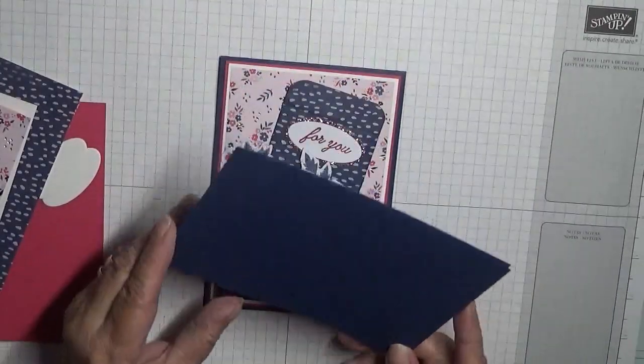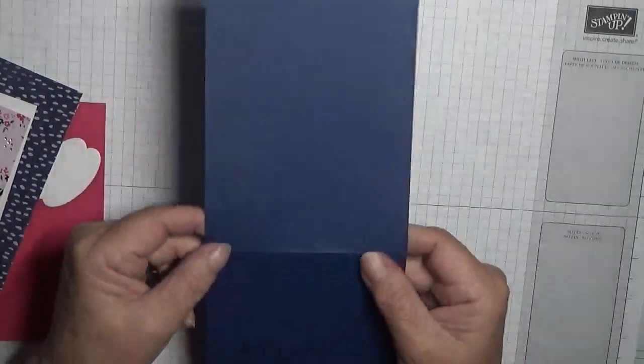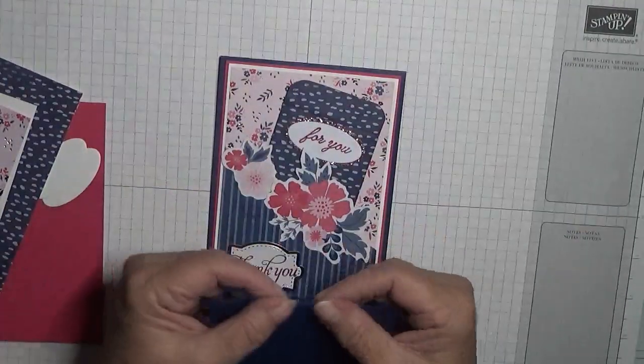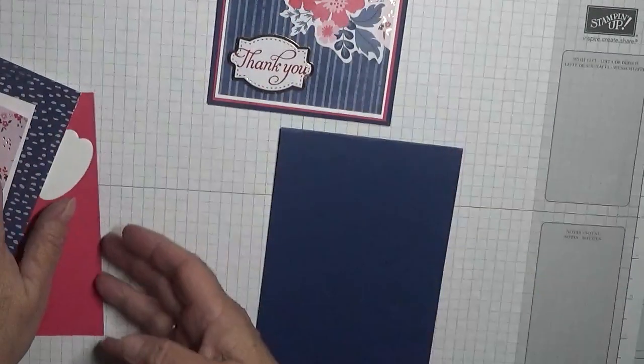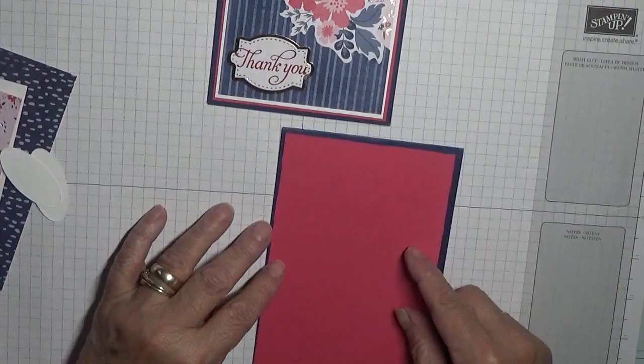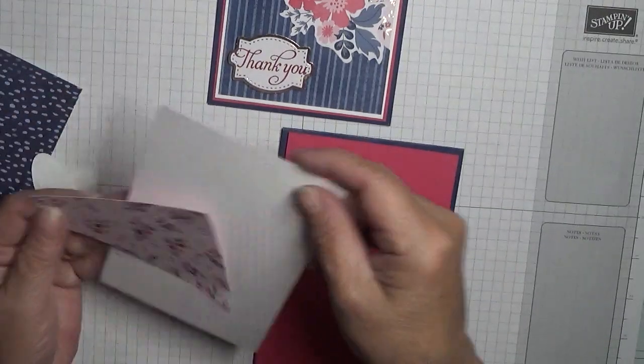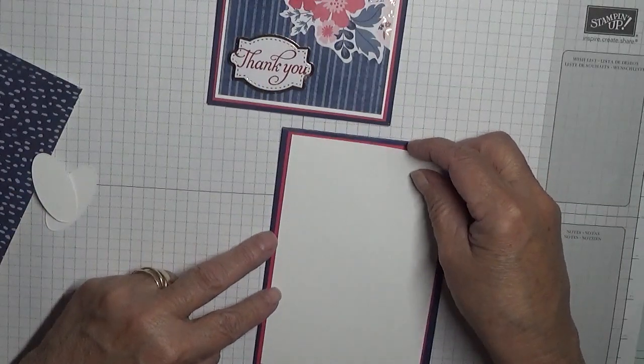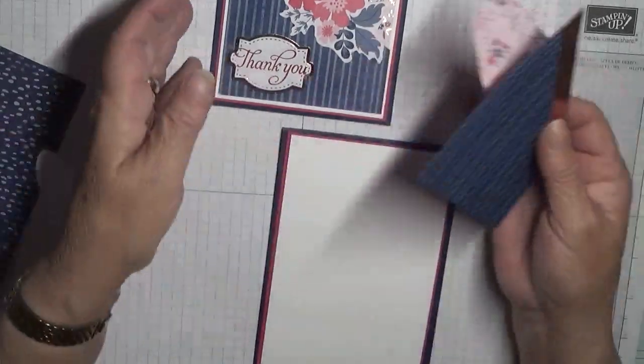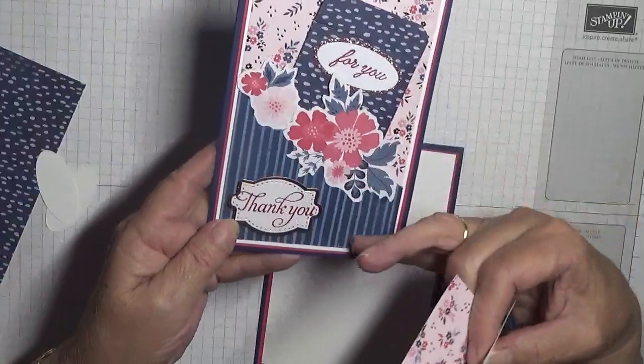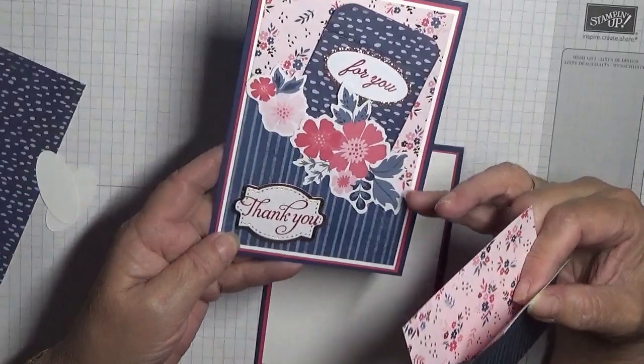To make this card I have got a Night of Navy top folding card at four and one eighths and the length of an A4 sheet. I'm just saying that because America and England are different sizes. A piece of Melon Mambo at five and five eighths by three and seven eighths, a piece of white at five and a half by three and three quarters.